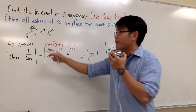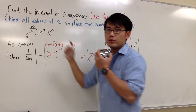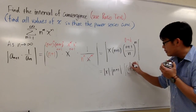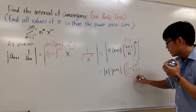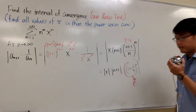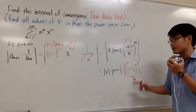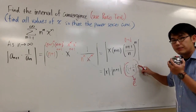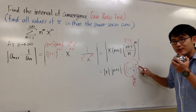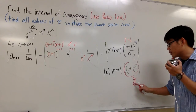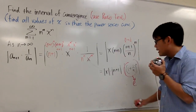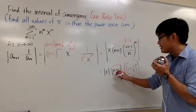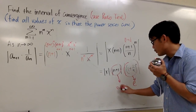Remember, we are still taking the limit as n goes to infinity. This part — (1 + 1/n)^n — goes to the number e as n goes to infinity. That is a standard fact you can use. And then as n goes to infinity, the (n+1) term goes to infinity.